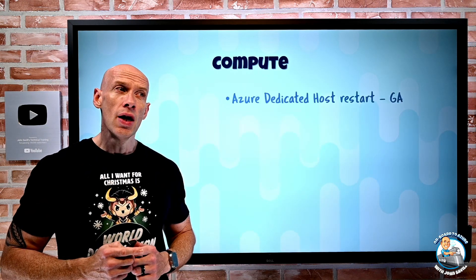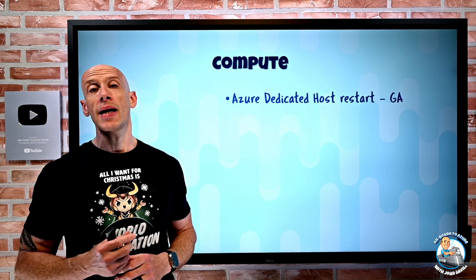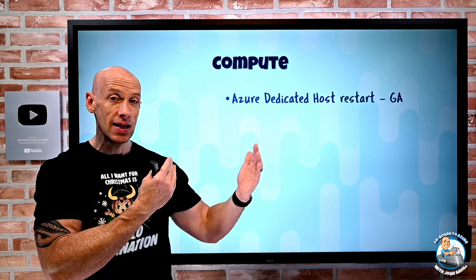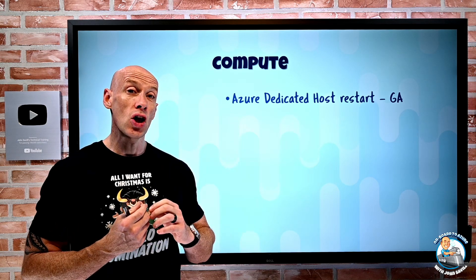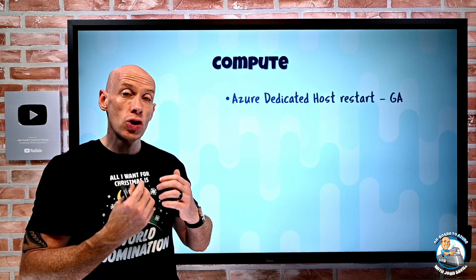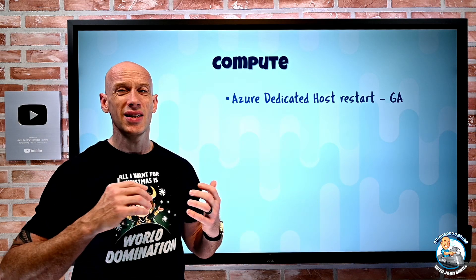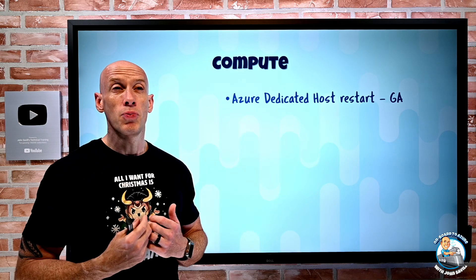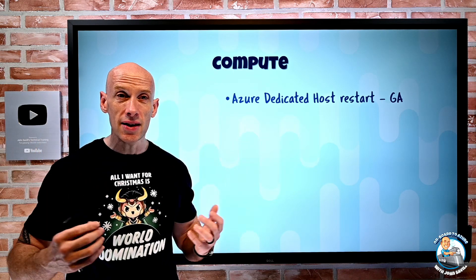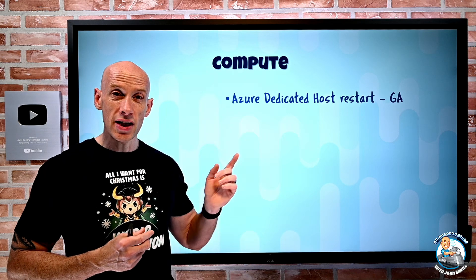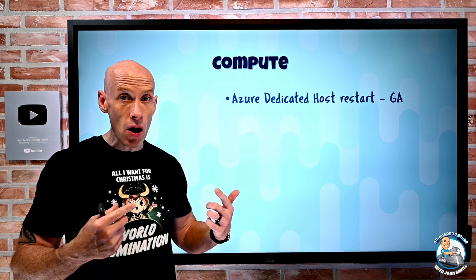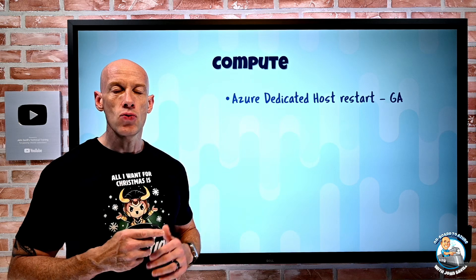On the compute side, Azure Dedicated Host now has a restart capability in GA. Dedicated Host allows the customer to buy out the capacity of an entire physical node of a certain SKU, and then fill it with whatever sized VMs correspond to that SKU. Now, maybe for health reasons or troubleshooting, you can restart the host. This restarts the physical box and any VMs running on it — it restarts on the same physical box without moving anything.